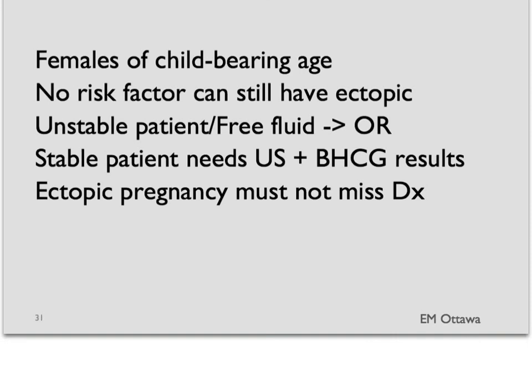To recap: all females of childbearing age need a urine beta-HCG. Patients who have no risk factors can still have an ectopic pregnancy. Any patient who is unstable or has free fluid in the abdomen needs to go to the operating room. For stable patients, management is a combination of what shows on ultrasound — whether there is or is not an intrauterine pregnancy — and how high the beta-HCG level is in the blood. Ectopic pregnancy, because of its potentially devastating complications, is a must-not-miss diagnosis in the emergency department. Thank you very much for watching.